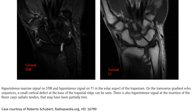This is an example of MRI of a trapezoid fracture showing hyperintense marrow signal on STIR and hypointense signal on T1 in the volar aspect of the trapezoid. On fat-suppressed gradient echo sequence, a small cortical defect at the base of the trapezoid can be seen. There is also hyperintense signal at the insertion of the flexor carpi radialis tendon that may have been actually torn.